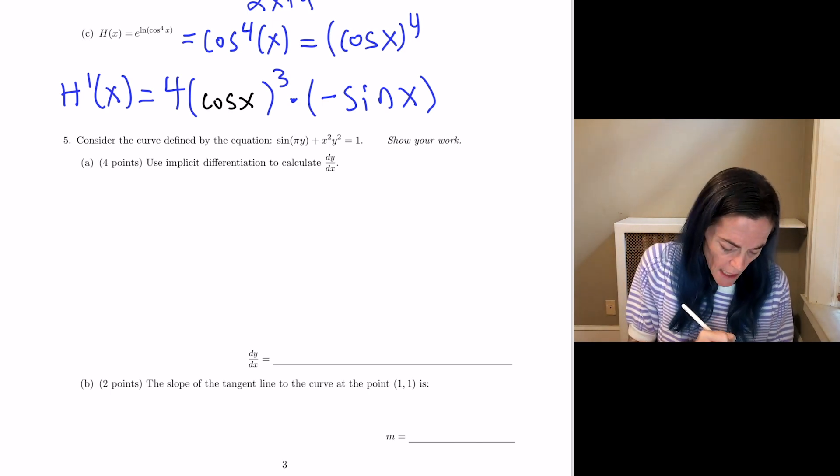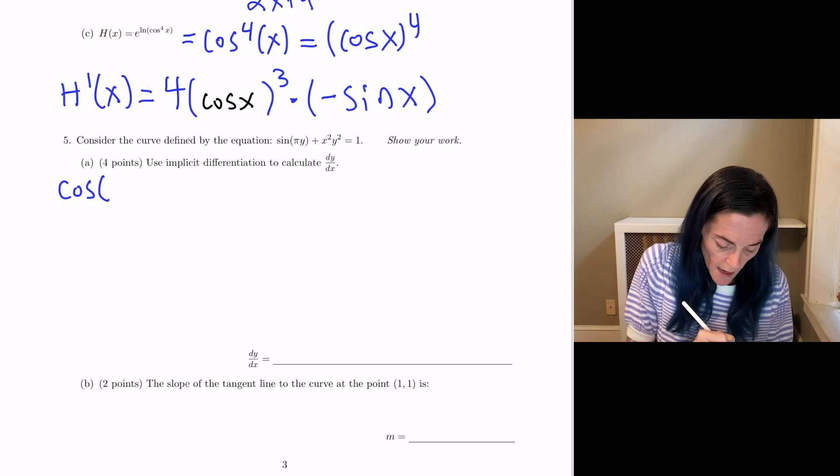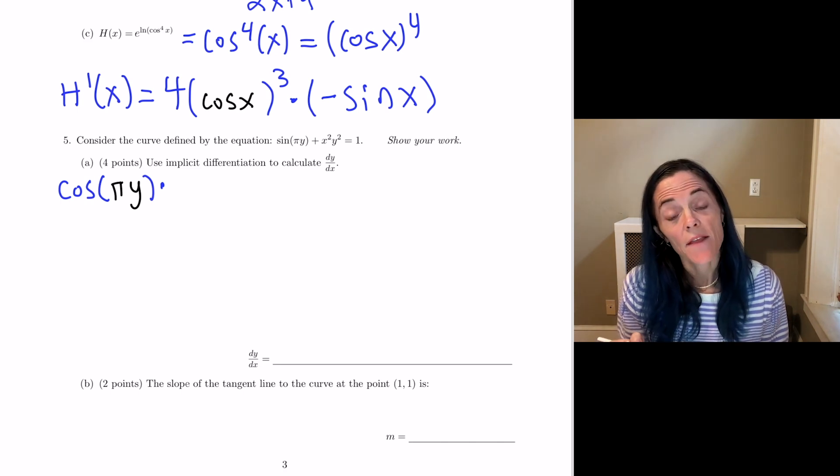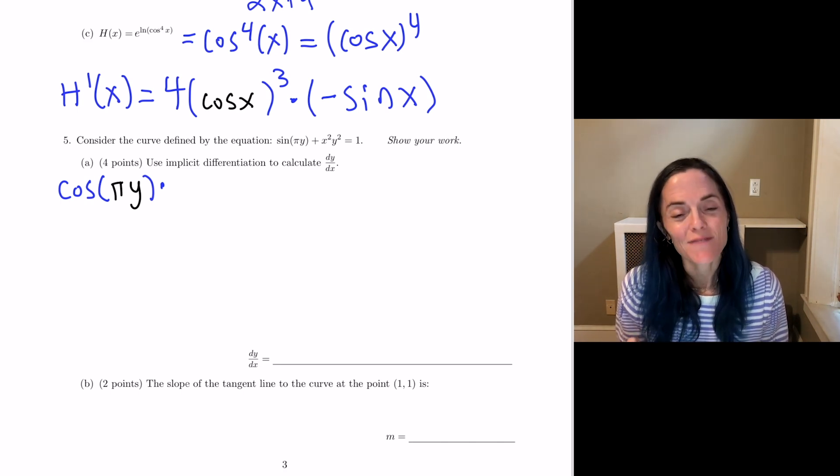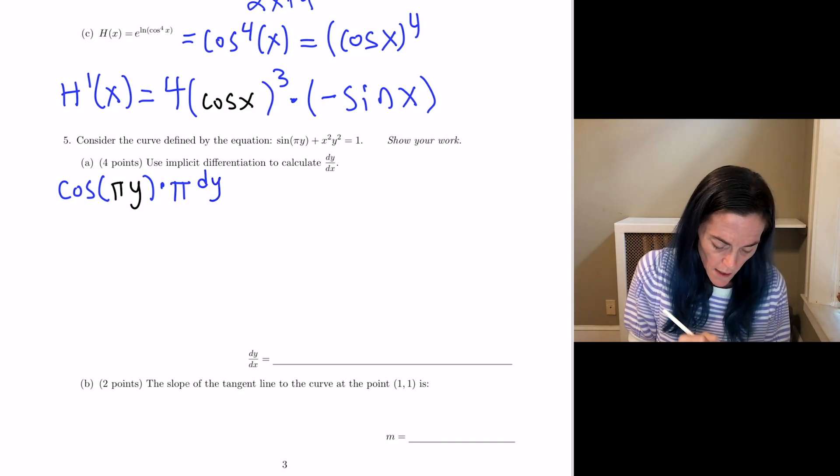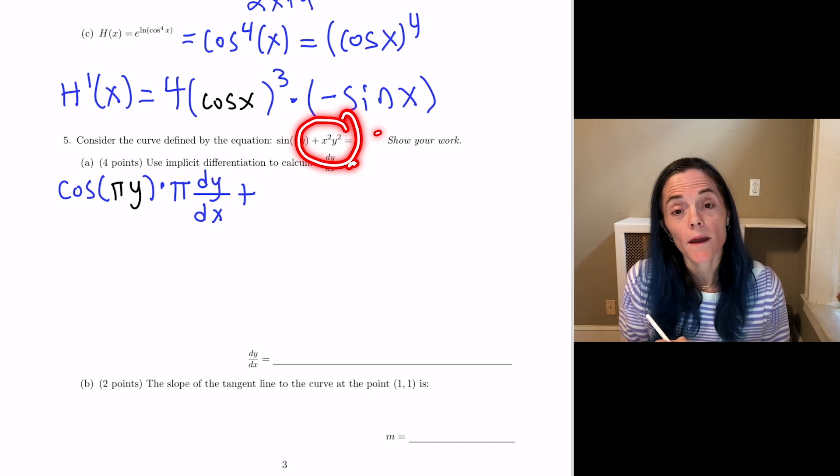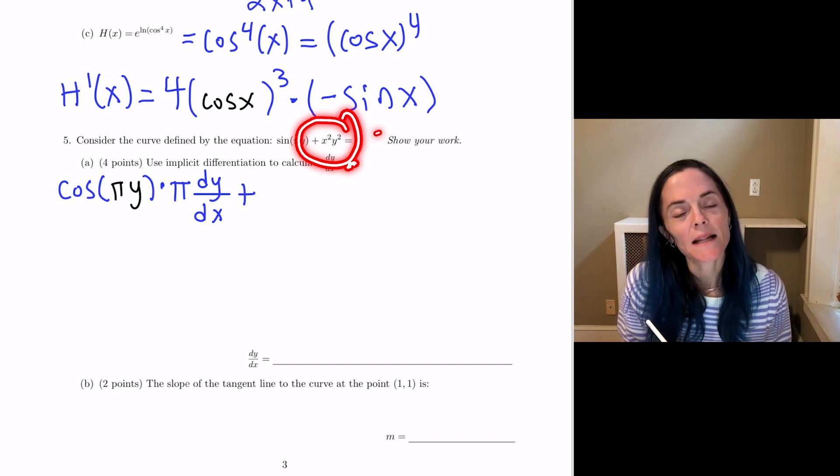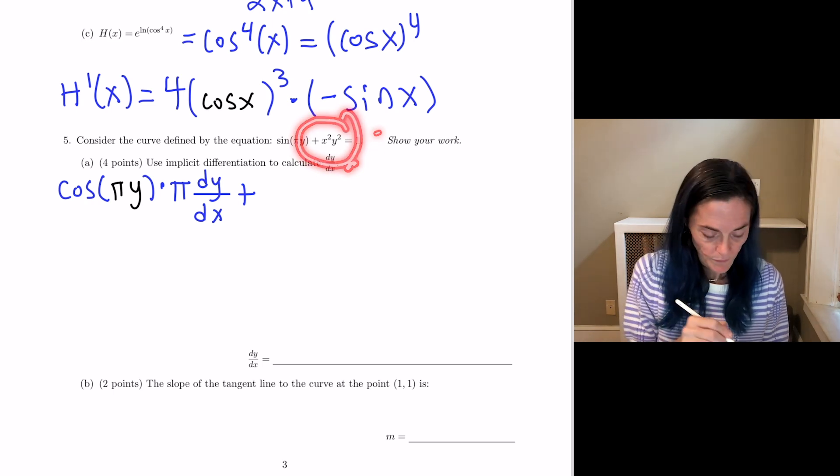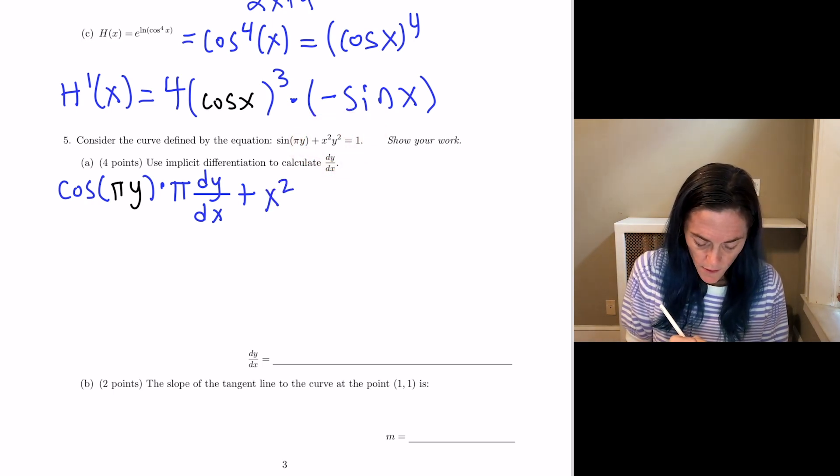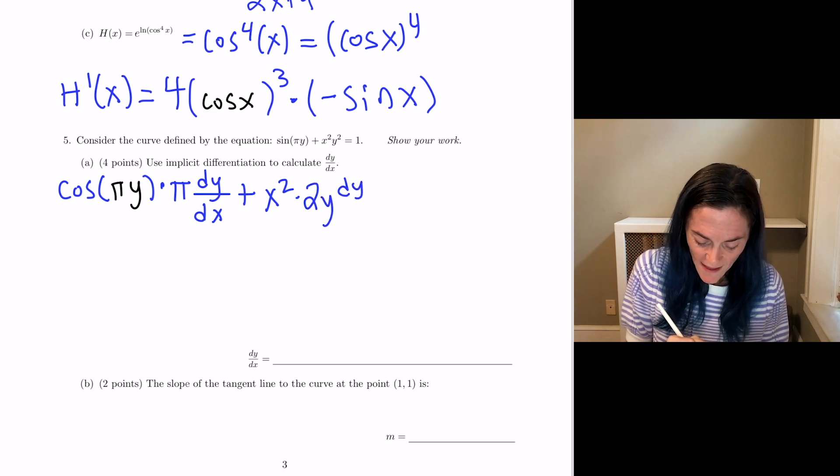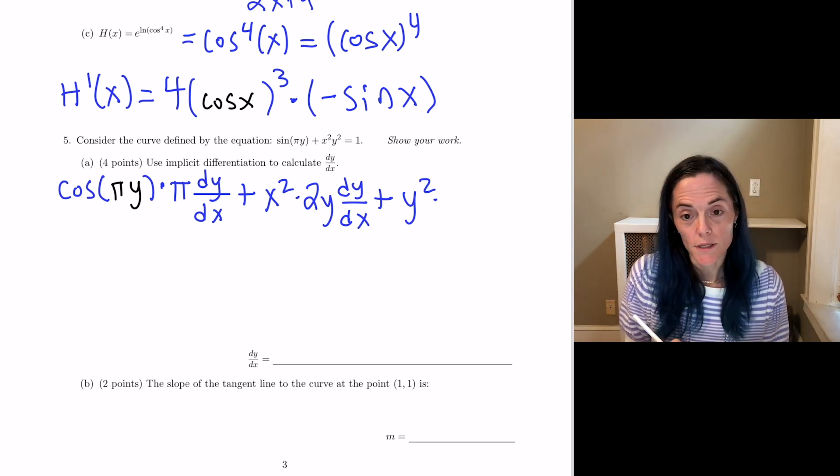So derivative of sine is cosine. Okay, we would have pi y. Now, times, this is chain rule here, the derivative of pi y, with respect to x, this would be pi times dy dx. So I have differentiated the first term, put a plus. Well, how do we differentiate x squared, y squared? Fundamentally, I see a product. So this will be product rule. We have first, derivative of the second is 2y dy dx plus the second derivative of the first is 2x.